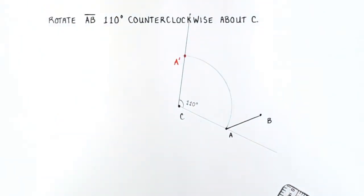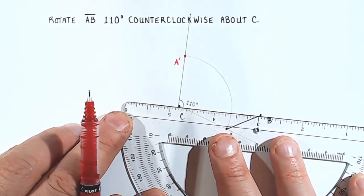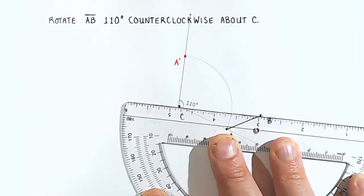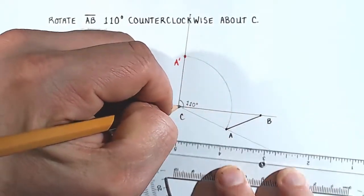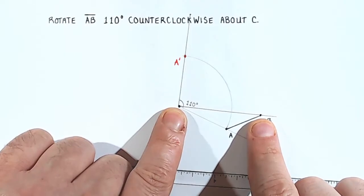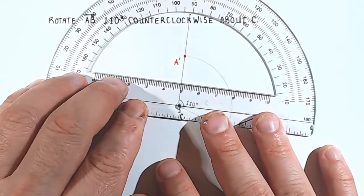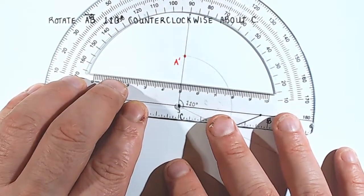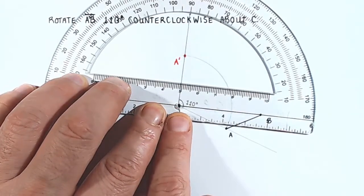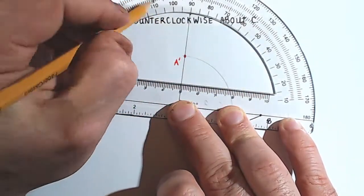Now I'll do the same thing for B. The very first thing I'm going to do is draw a line segment connecting B with C. Now what I'm going to do is measure off 110 degrees from this line segment. So we spin our protractor around and center that hole over point C and line up our guidelines with the line segment we just drew. I'm going to locate 110 again, and I see that it is right there.